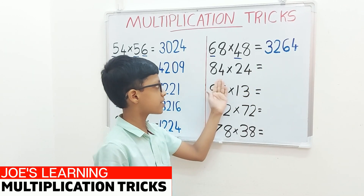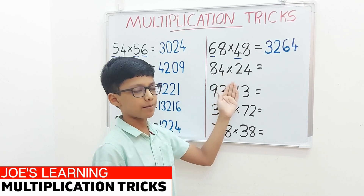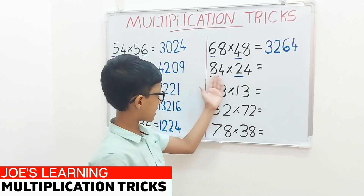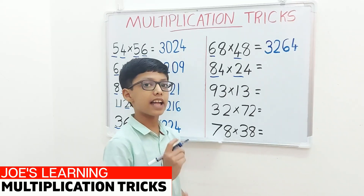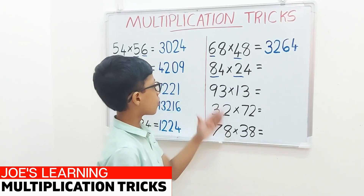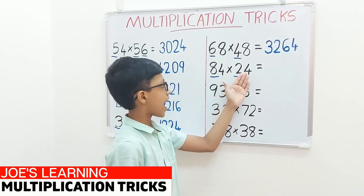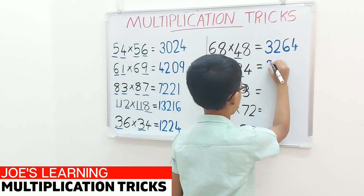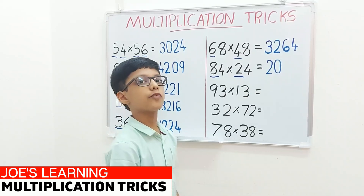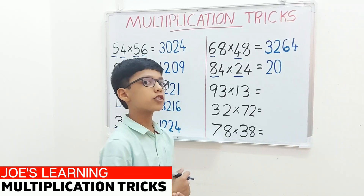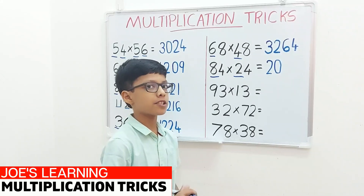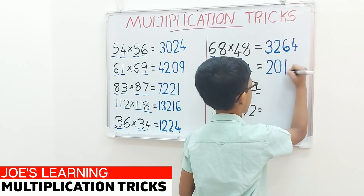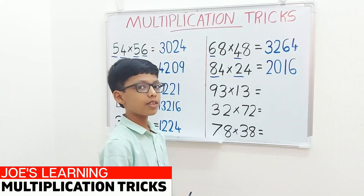Now let's move on to the example 84 multiplied by 24. First we have to look at the digits in the tens place, 8 and 2, and multiply them together and add the digit in the ones place. So 8 multiplied by 2 is 16, and 16 plus 4 equals 30. Write it down as the first two digits of our product. To find the next two digits, multiply the digits in the ones place. So 4 multiplied by 4 equals 16. Write it down as the next two digits of our product.